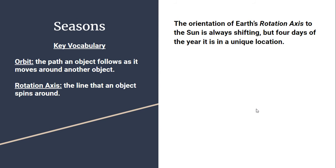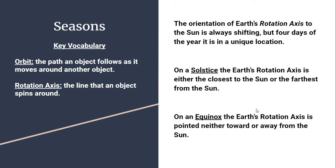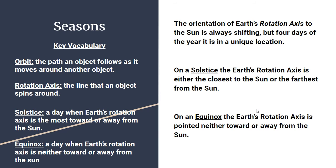The orientation of the axis is constantly changing as we move further around our revolution each day. But there are four special days around our orbit each year. We call two of those days a solstice — that's when the Earth's rotational axis is either closest to or farthest from the Sun, pointed directly at it or directly away. The other two days are equinoxes, when the axis is pointing neither toward nor away from the Sun. Both 'solstice' and 'equinox' appear in our key vocabulary terms — make sure to copy them down.